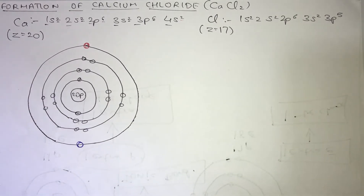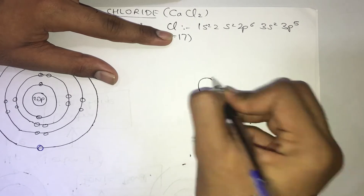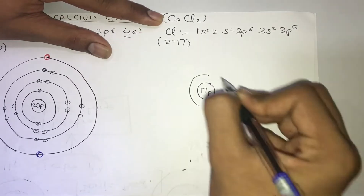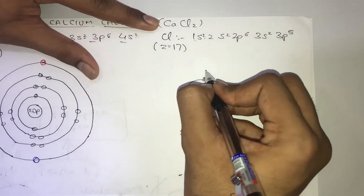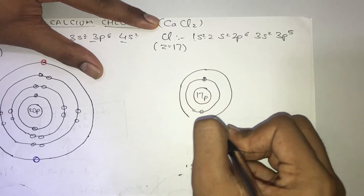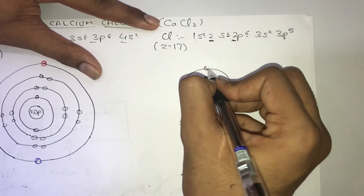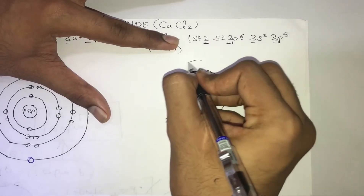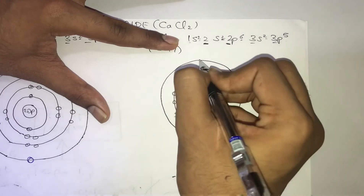Now let us draw the diagram of the chlorine atom. It will have a nucleus, and inside the nucleus there are 17 protons present. In the first energy level there are 2 electrons. In the second energy level there are 2+6, total 8 electrons. And in the third energy level there are 2+5, total 7 electrons.